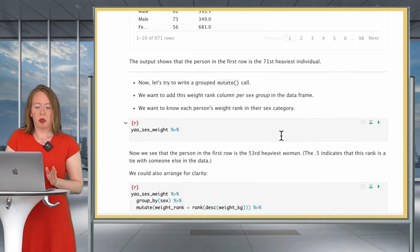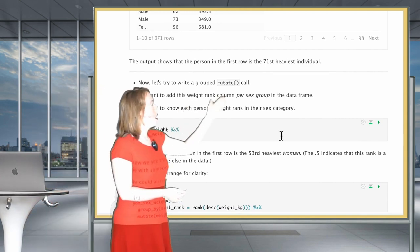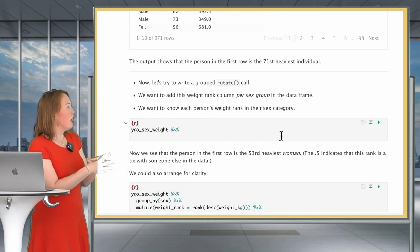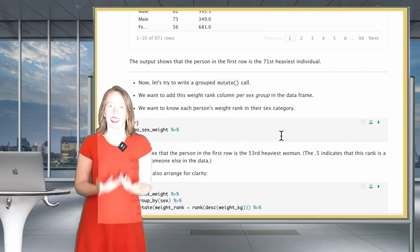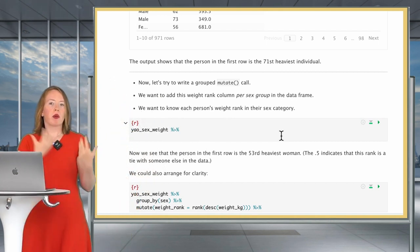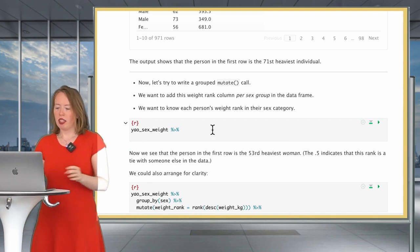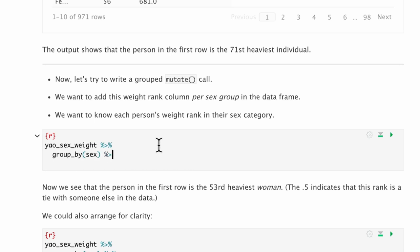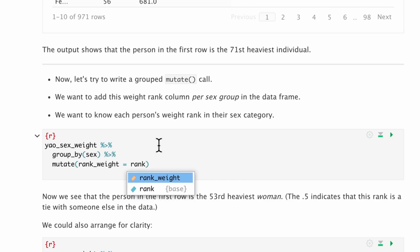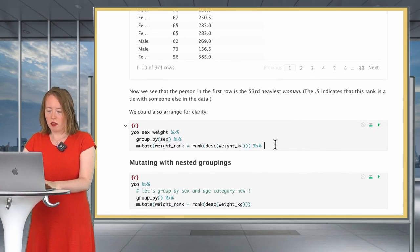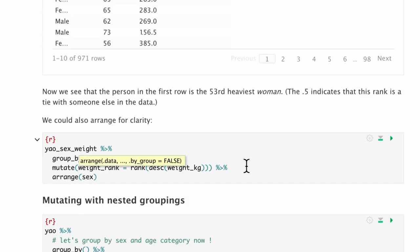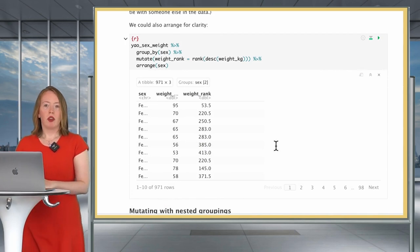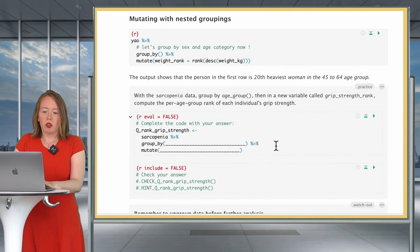We've done a simple mutate call. We're familiar with that. Let's see what happens when we do a grouped mutate call. We want to add this weight rank column per sex group in the data frame. So we're going to group by gender. And we want to know each person's weight rank in their sex category. So not overall individuals, but it's how are women ranked compared to women? How are men ranked compared to men? Let's see what this looks like in the code. We would do group_by(sex). Then we would do the same operation as above, which is mutate rank_weight equal to rank(desc(weight_in_kilograms)). Let's once again arrange this to get some clarity. So we arrange by sex. So we've arranged by sex to have a bit of a clearer view of the different ranks.